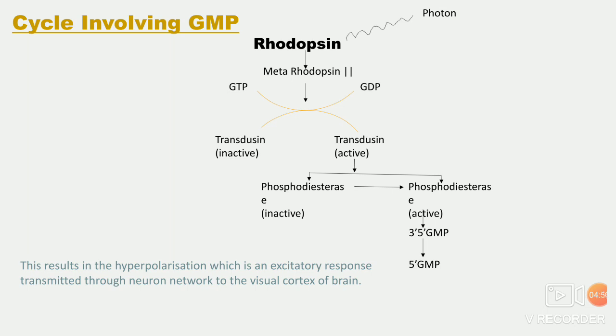Photon — that is light — strikes rhodopsin, which gets converted into metarhodopsin 2 with the help of GTP and GDP as energy source. This gets converted into transducin inactive and transducin active. Active transducin में phosphodiesterase inactive बनेगा, फिर phosphodiesterase active बनेगा, और जब phosphodiesterase active बनेगा उससे बनेगा 5'-GMP. This results in hyperpolarization — जो एक excitatory response है — जो neuron network से visual cortex of brain को transfer होता है.